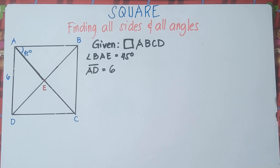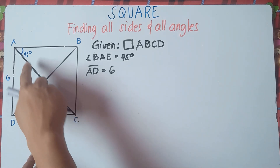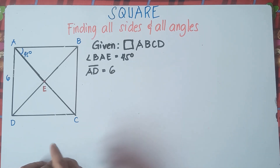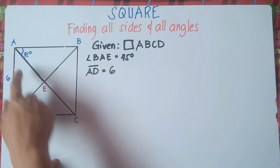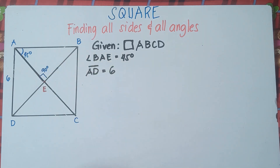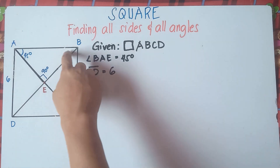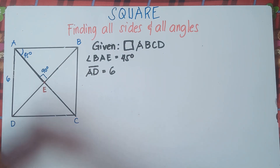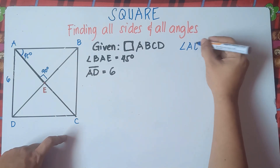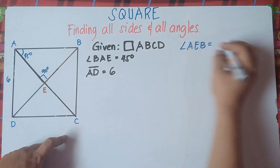So which one do you prefer, class? All sides or all angles? Let's start with all angles. We know that this is 45 degrees. And do not forget that in a square, one of the properties says that the diagonals are perpendicular. So therefore, this angle here is equals to 90 degrees. So angle AEB is equals to 90 degrees.